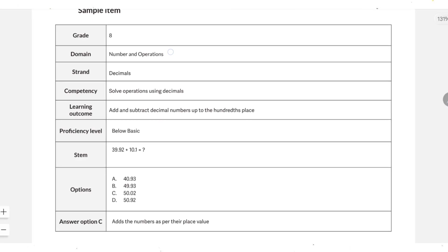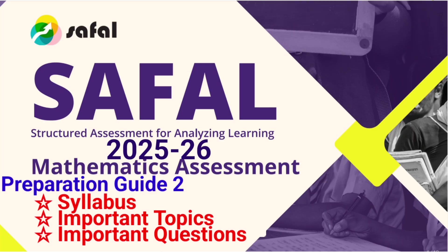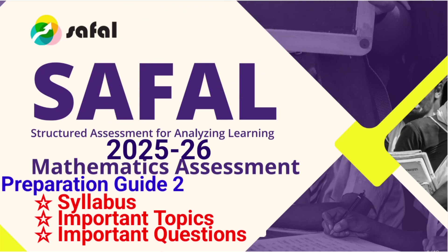Here is one example question from Number and Operations — decimals — where you need to solve a problem using decimals. You are given two numbers to add, and four options are provided; you need to choose the correct answer. The answer here is option C. Students, remember: SAFAL is not just another exam — it's an opportunity to show how well you truly understand concepts. Focus on learning with curiosity and practice regularly, and you will definitely do great in SAFAL 2025-26. If you found this video helpful, don't forget to like, share, and subscribe for more educational updates and preparation tips. See you in the next video — keep learning and stay confident.